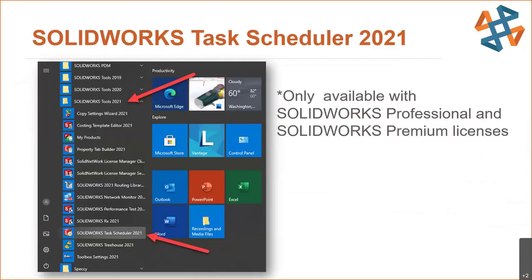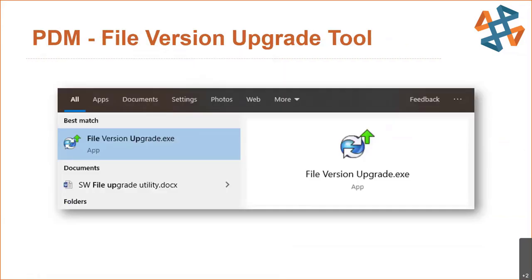There are a couple of ways to rapidly update files. You can use the SOLIDWORKS Task Scheduler, located under Windows programs under SOLIDWORKS Tools — note it's only available in SOLIDWORKS Professional and Premium licenses. You can also update multiple files at once from inside the assembly using a system option, just hit save. If you have PDM, it has its own File Version Upgrade Tool — everything must be checked into the vault first, and it runs a report for any errors. For large vaults, share the task among several computers or run it end-of-day on a Friday.